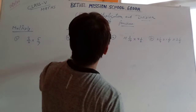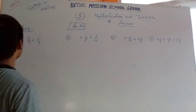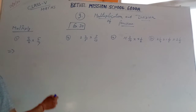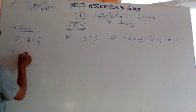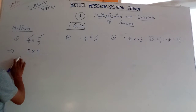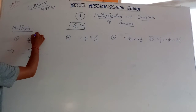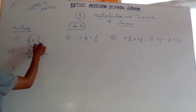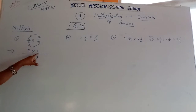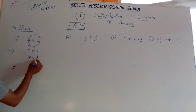Now I solve exercise 3.4. I have taken 4 questions — this is also multiplication. The rule says that if two fractions are given, multiplication of the fractions equals multiplication of the numerators by multiplication of the denominators. For example, 3 over 4 multiplied by 5 over 7: multiply 3 into 5 and 4 into 7, giving 15 upon 28.